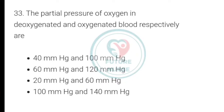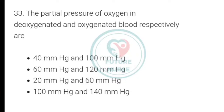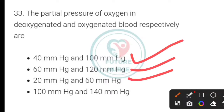The partial pressure of oxygen in deoxygenated and oxygenated blood respectively are which of the following? Options: 40 mmHg and 100 mmHg, 60 and 120, 20 and 60, or 100 and 140 mmHg. The correct answer is 40 mmHg and 100 mmHg.